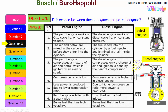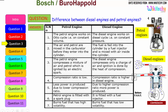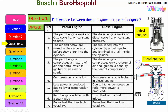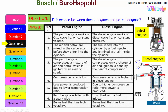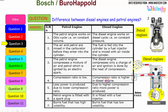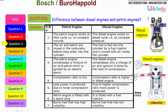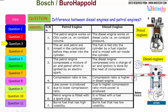The petrol engine compresses a mixture of air and petrol, which is ignited by an electrical spark. The diesel engine compresses only a charge of air, and ignition is done by the heat of compression. The compression ratio is low in a petrol engine, producing less power, whereas the diesel engine has a higher compression ratio and produces more power.